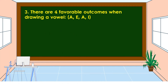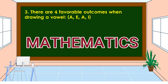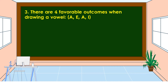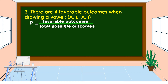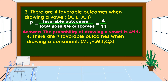For the third question, there are four favorable outcomes when drawing a vowel. We have four vowels in the word MATHEMATICS: A, E, A, and I. The formula is P is equal to favorable outcomes over total possible outcomes. The favorable outcomes is 4 and the total possible outcomes is 11. Therefore, the probability of drawing a vowel is 4 over 11.